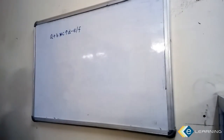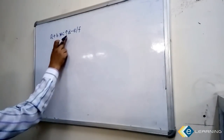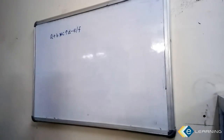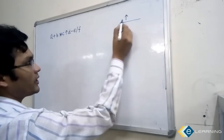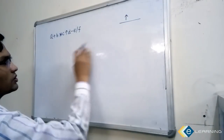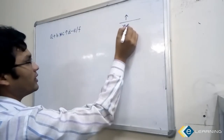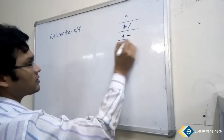For this, identify the operators: plus, star, divide, power, minus, and divide. Find out which operator has the highest precedence. Power has the highest precedence over all these operators. Star and divide have the same precedence, and plus and minus have the same precedence.